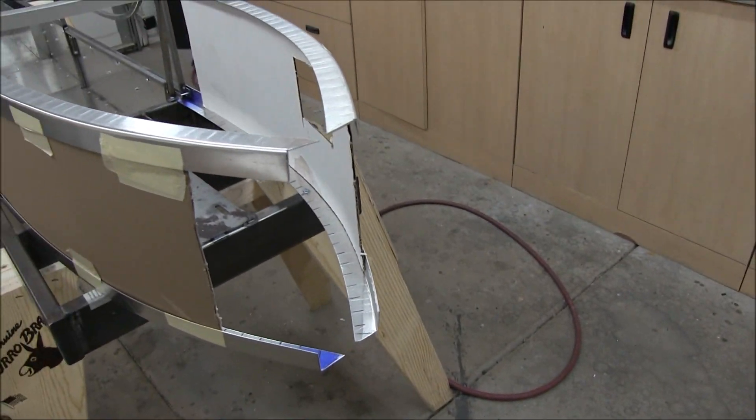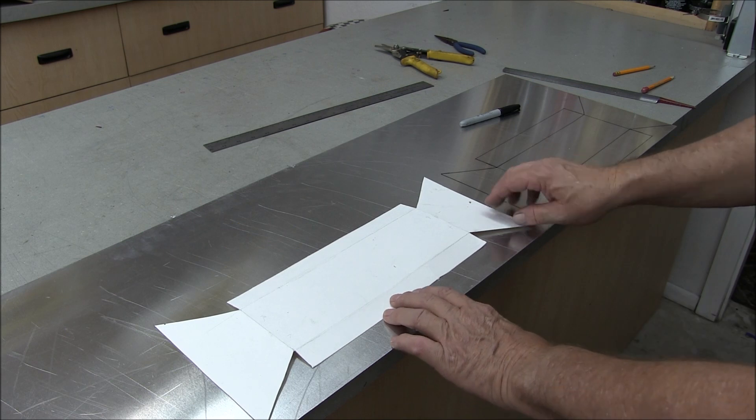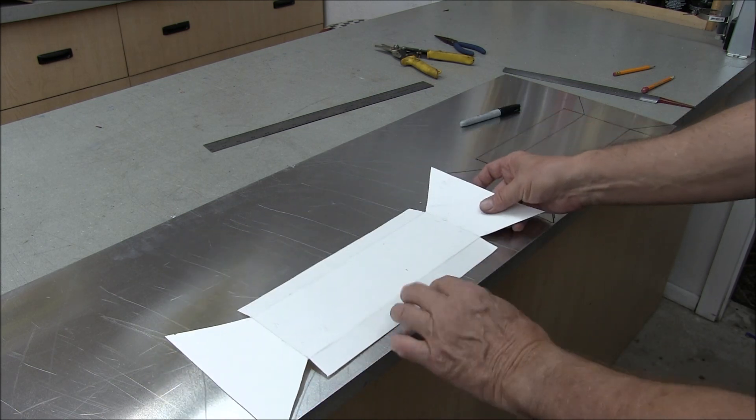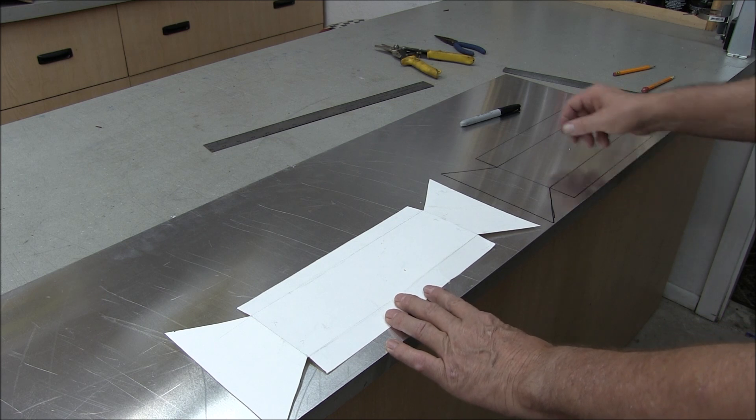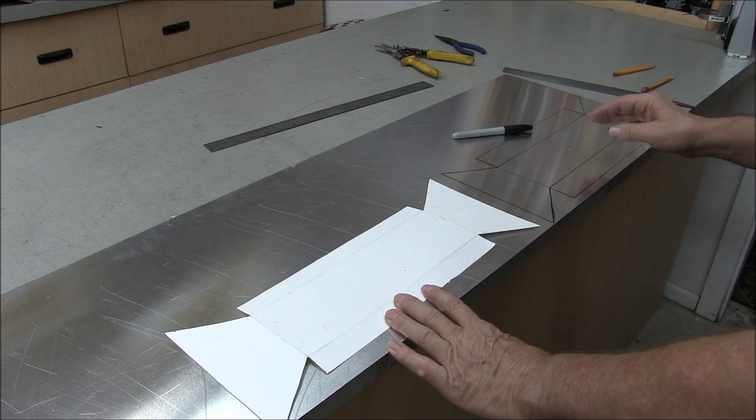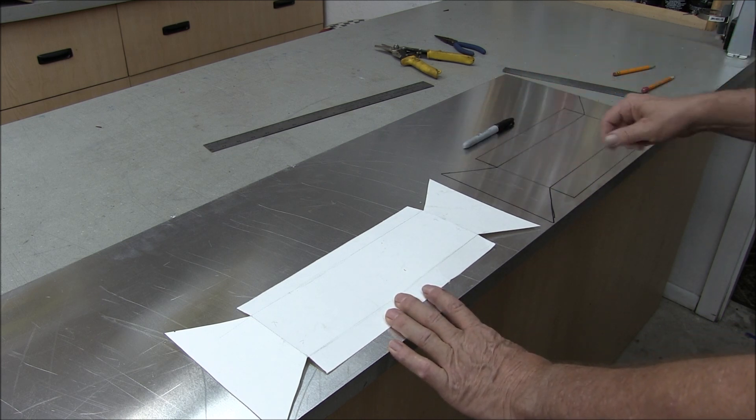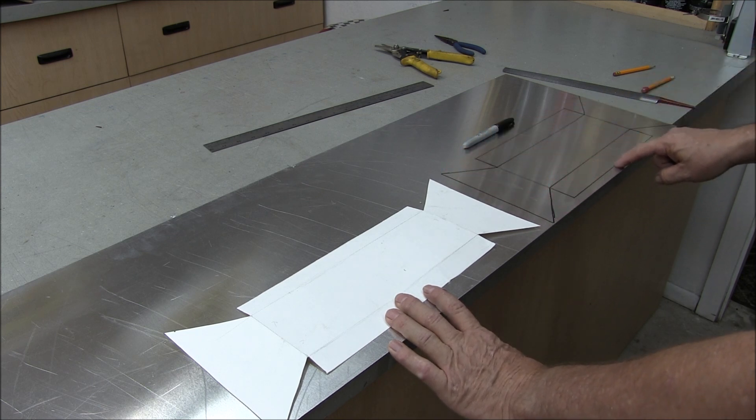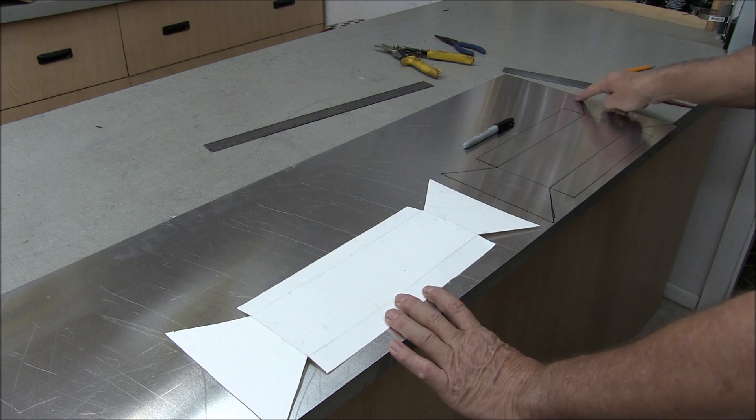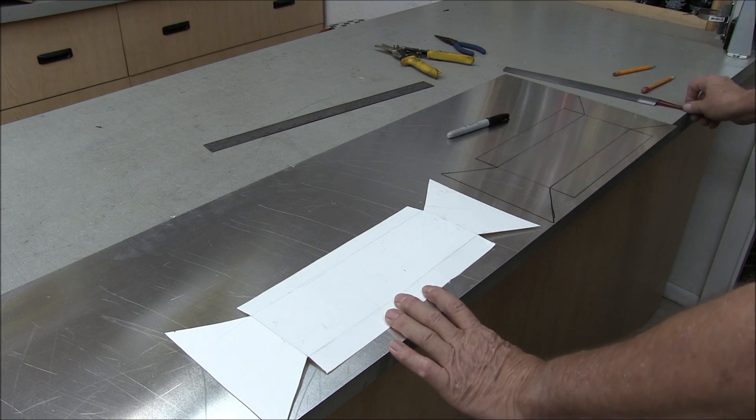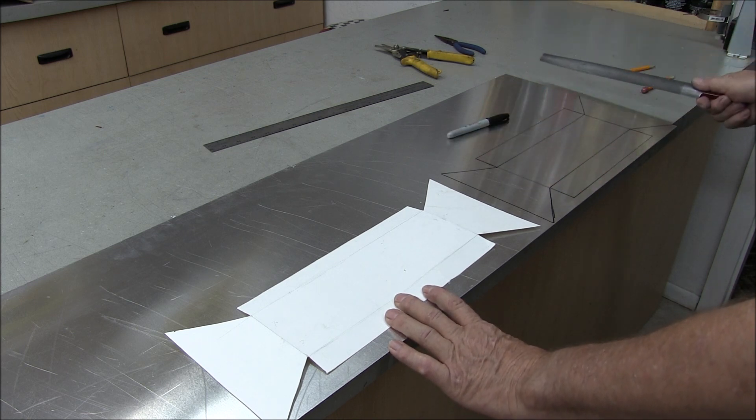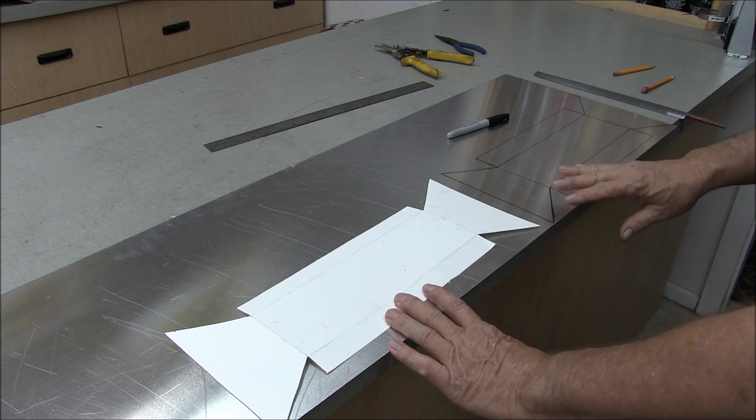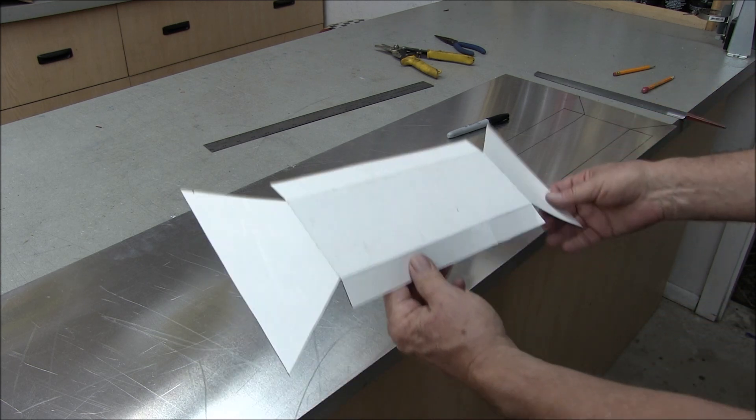So here I've transferred the pattern onto a piece of 40 thousandths aluminum, I used a Sharpie. And then when I take it out to the bandsaw, I'll cut right through the middle of the black line, I'll just stay in the black line, it's just wide enough. Then I can file it and clean up the edges, and that will yield a part that is the size of this.